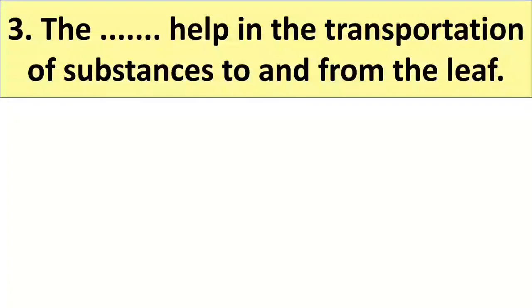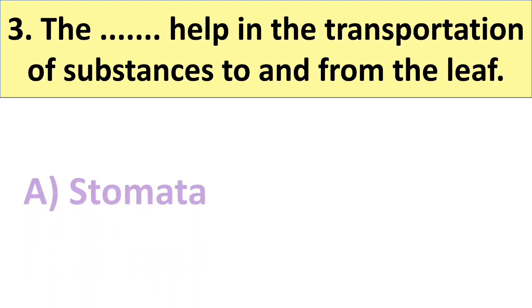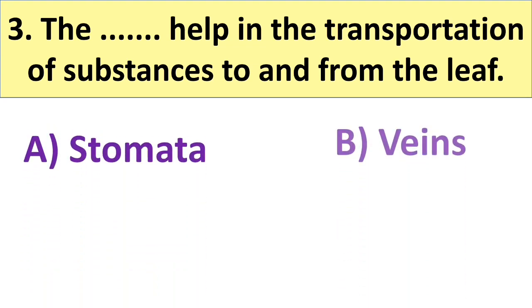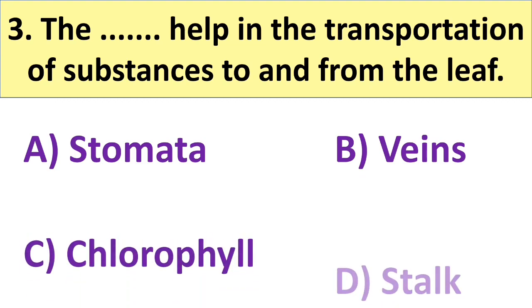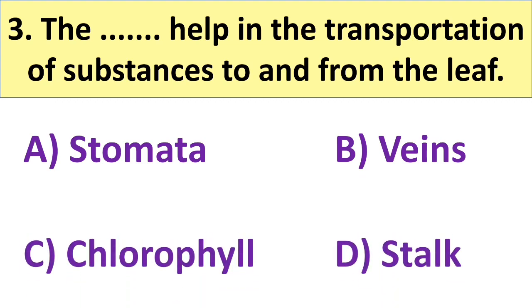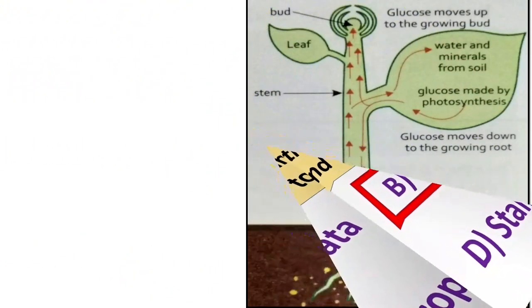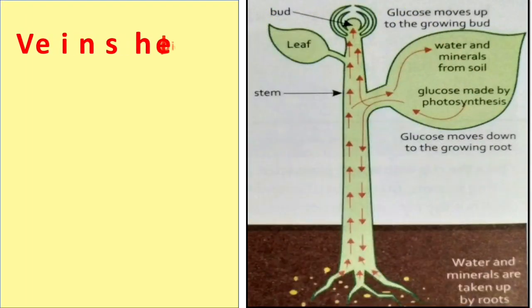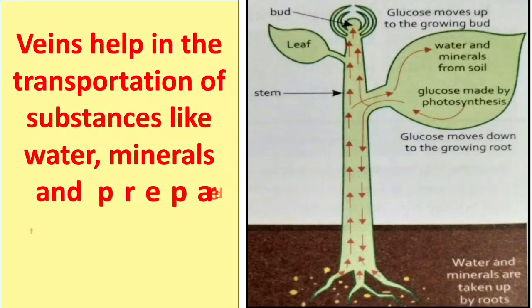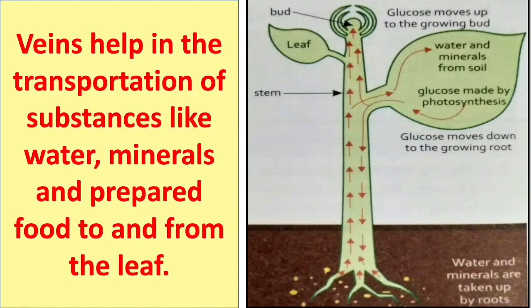The next question is: the blank help in the transportation of substances to and from the leaf. Your options are A. Stomata, B. Veins, C. Chlorophyll, and D. Stom. The right answer is veins. Veins help in the transportation of substances like water, minerals, and prepared food to and from the leaf.